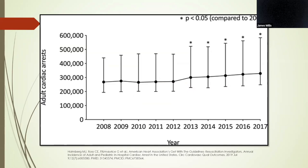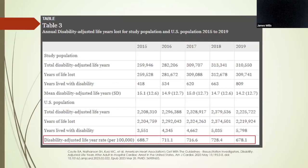For those of you who don't know, Get With The Guidelines is a registry, a national perspective in-hospital cardiac arrest registry sponsored by the AHA. This is another review of the Get With The Guidelines registry from the years 2015 to 2019, and it looked at disability-adjusted life years that were lost attributable to in-hospital cardiac arrest, and they noted that it's been generally rising during the years studied.